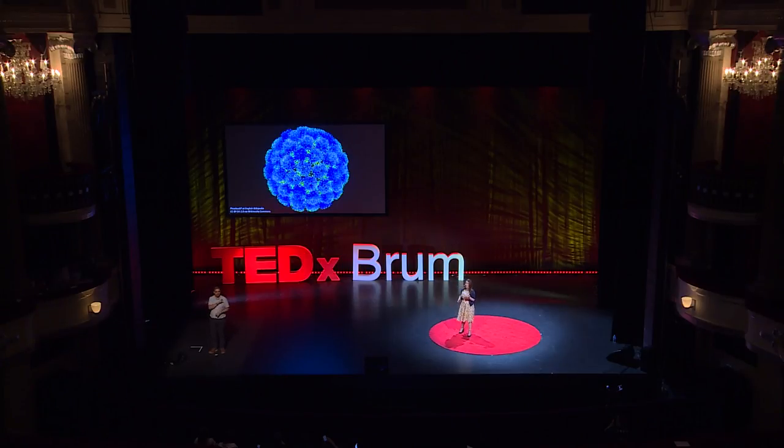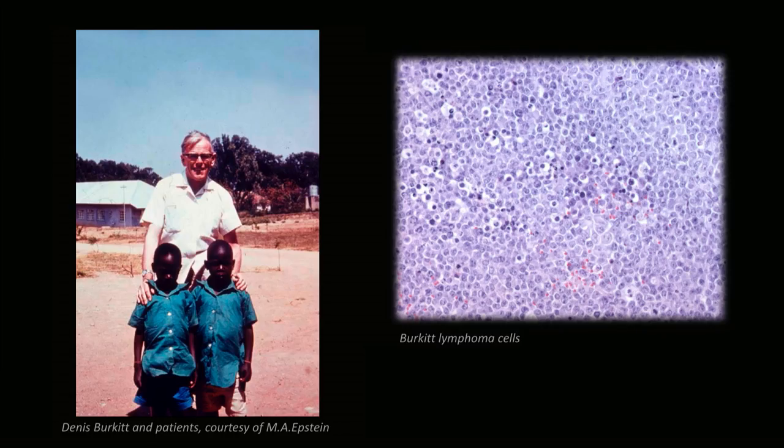But this property of latency has also meant that the road to working out what EBV is doing has been fraught with difficulty. This is Dennis Burkitt, who in the 1950s was working as a surgeon in Uganda and made a startling observation. He noticed that he and his colleagues were treating a really large number of children who had very fast-growing and rapidly fatal tumors in their faces and their abdomens. He thought this was so bizarre that he resolved to figuring out as much as he could about it and how the cancer, now called Burkitt lymphoma, might be treated.